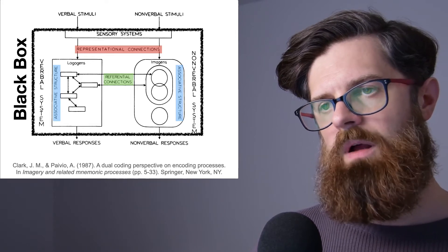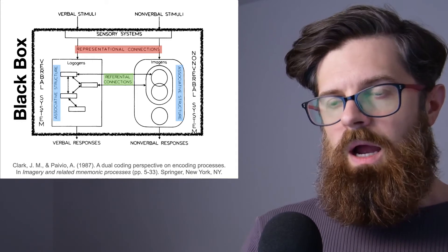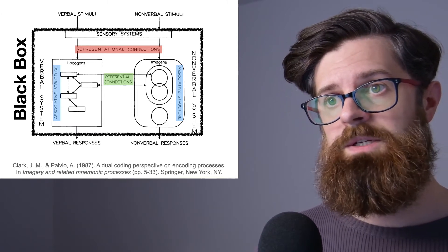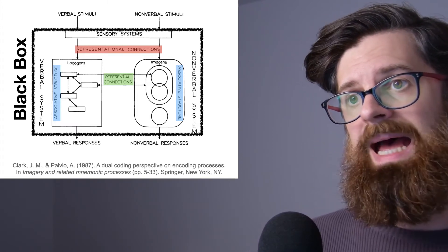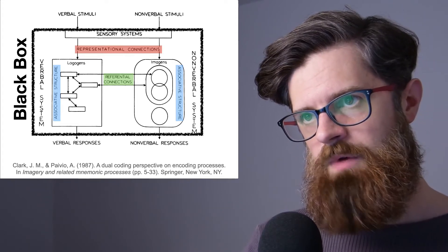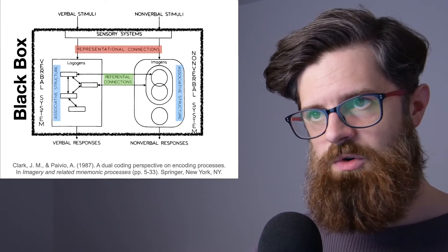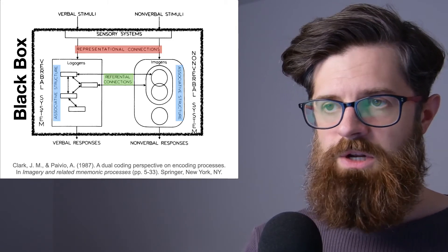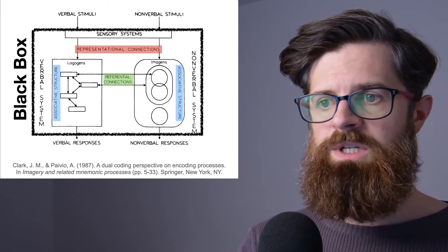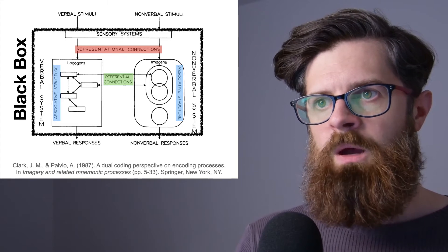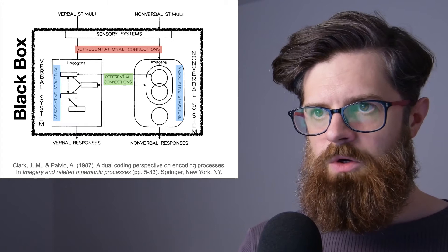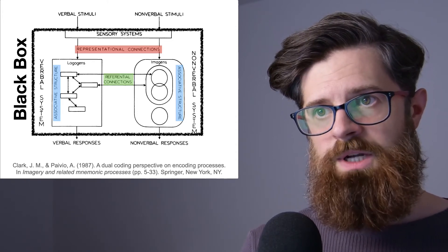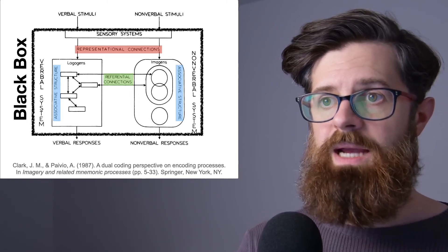Finally, we have these referential connections. What was proposed here is that there is some flow of information, some flow of activation, between various triggered logogens and imagens. So for example, if you read the word 'chair,' you're given this verbal stimuli of chair. The representational connections would activate a chair-like logogen. The associative connections might activate a couple of associated logogens like sitting or cushion. But the referential connections might activate corresponding visual imagery. So if we're thinking of chair, cushion, sitting, maybe these referential connections are actually activating some visual imagery of these objects and concepts as well.